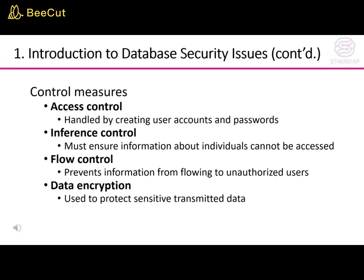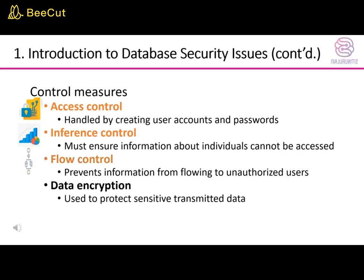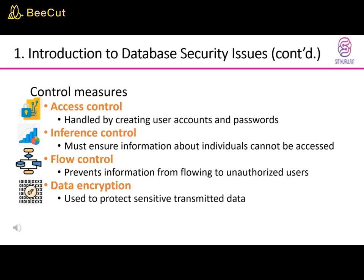The measures of control can be broadly divided into the following categories: access control, handled by creating user accounts and passwords; inference control, which must ensure information about individuals cannot be accessed; flow control, which prevents information from flowing to unauthorized users; and data encryption, used to protect sensitive transmitted data.